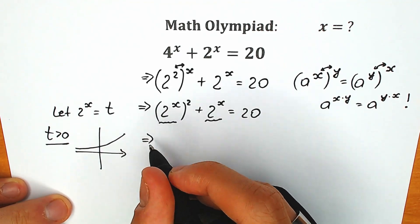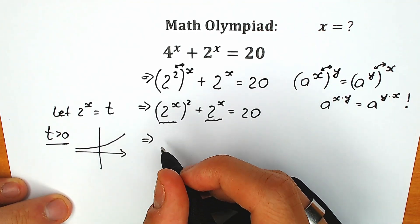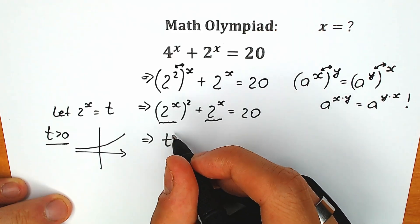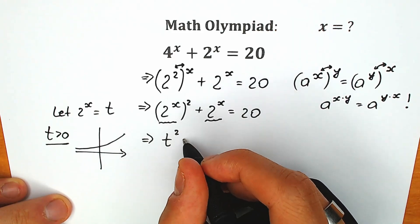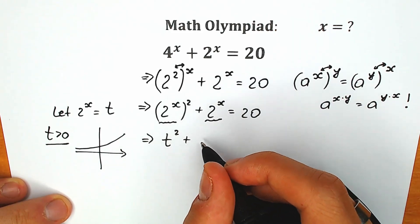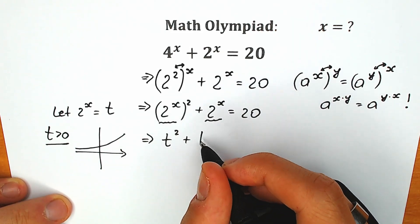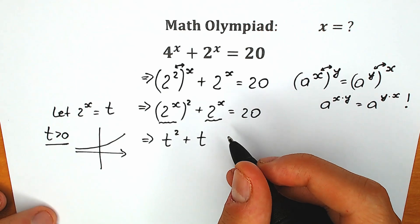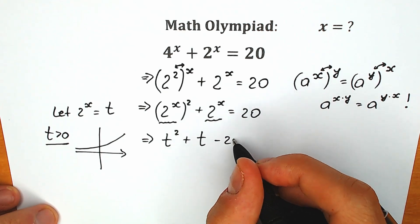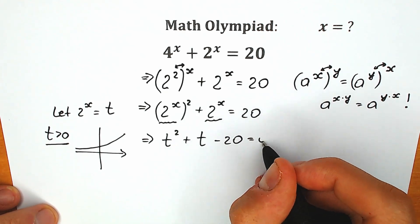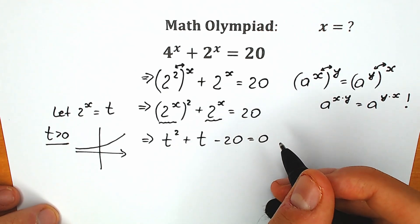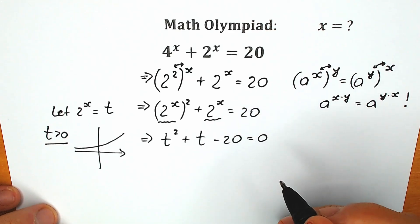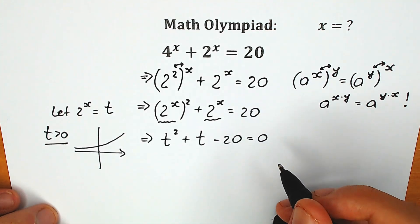As I said before, 2 to the power x equals t. So we have t squared plus t — instead of 2 to the x we write t. And this 20, let's write on the left side: minus 20 equals zero. Right now we're going to solve this — it's a basic quadratic equation.